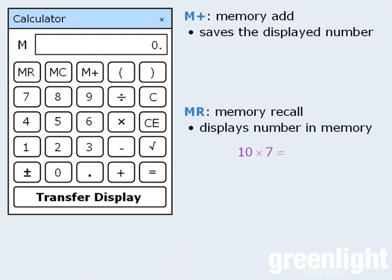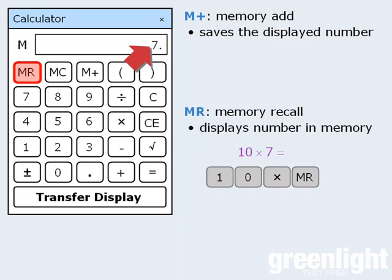So, for example, if we later want to multiply 10 by 7, we first enter 10, then click multiply, and then when we press the memory recall button, our saved number, which is 7, appears on the screen. And from here, we press equals to get the product 70. Let's clear the display and move on.